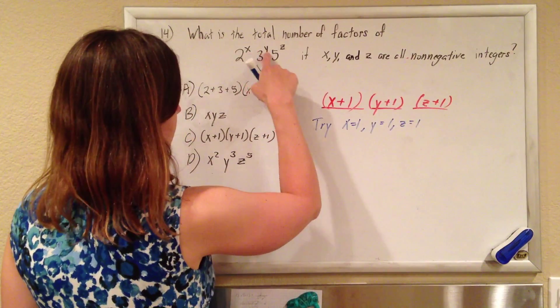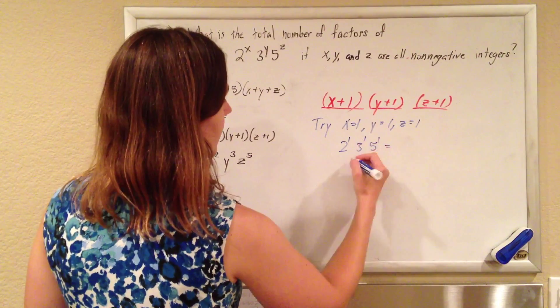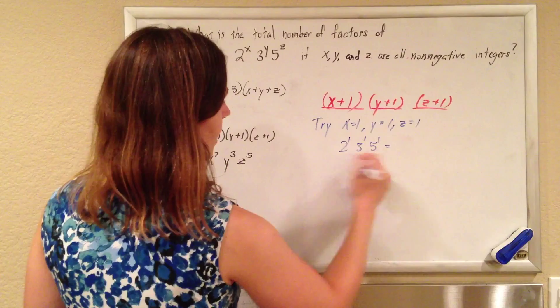So if x is 1, y is 1, z is 1, I have 2 to the 1, 3 to the 1, 5 to the 1. So this is 30.